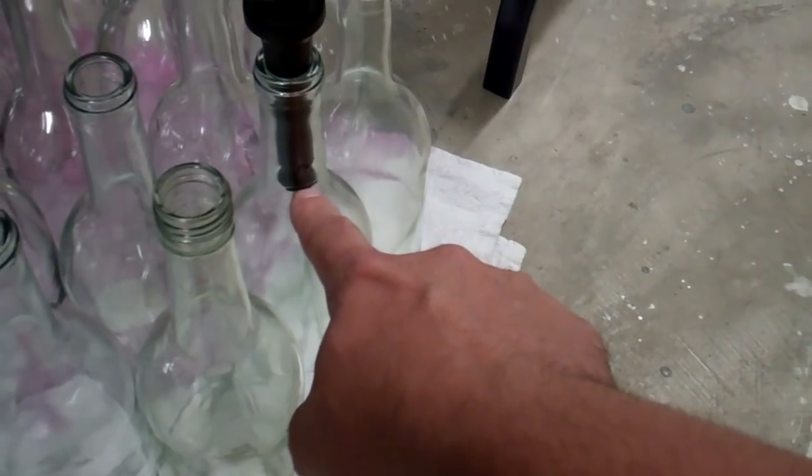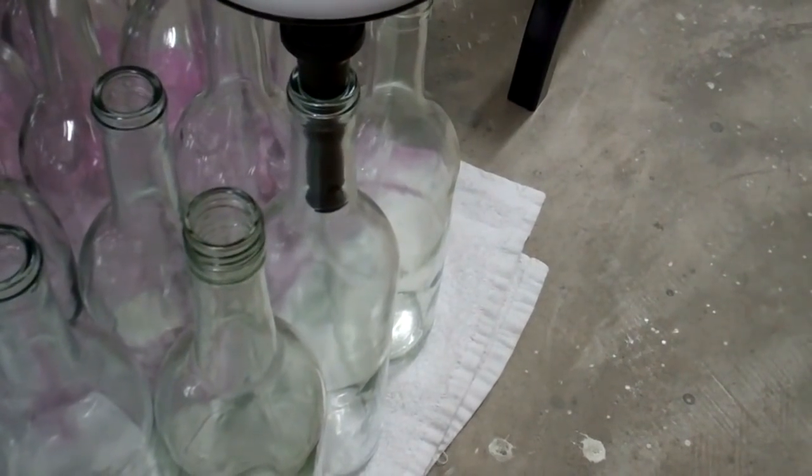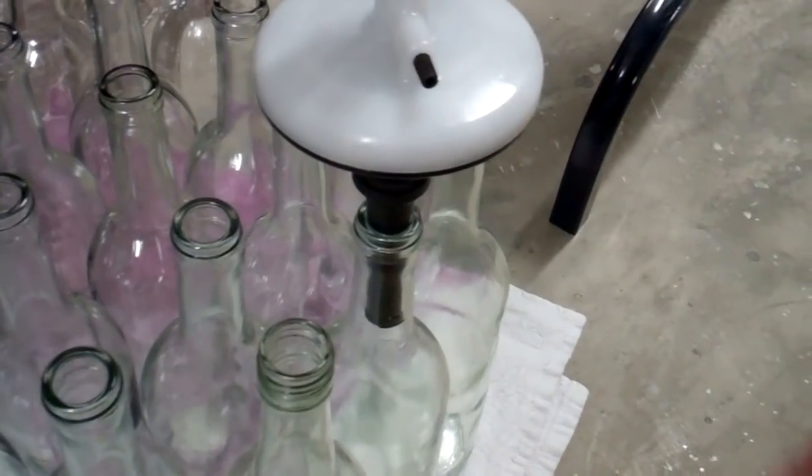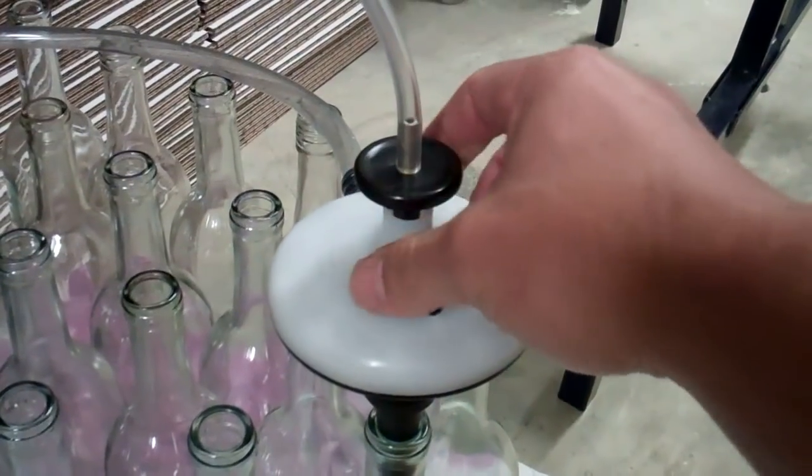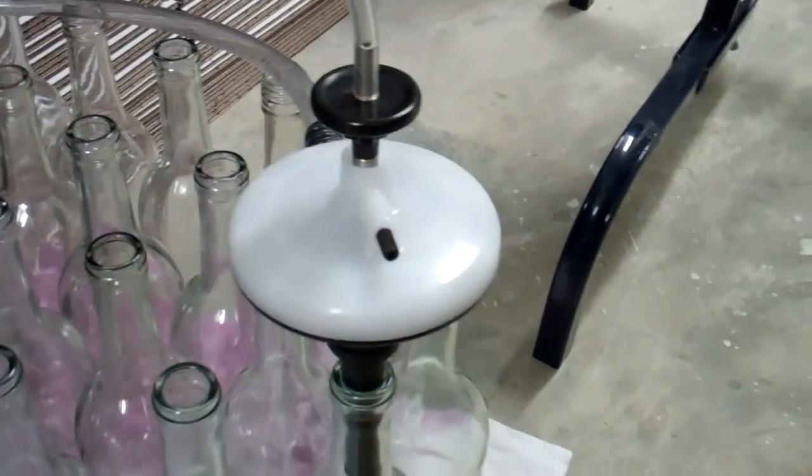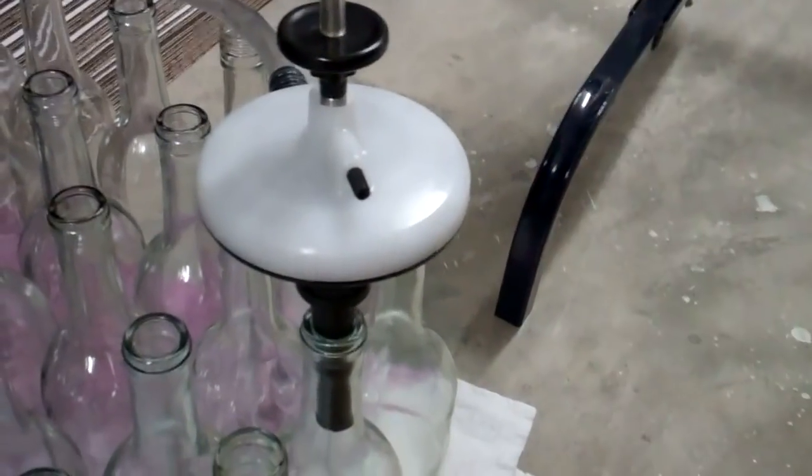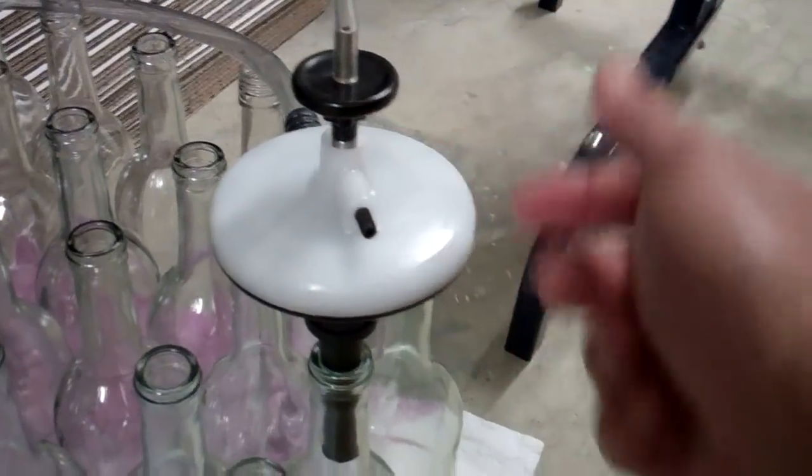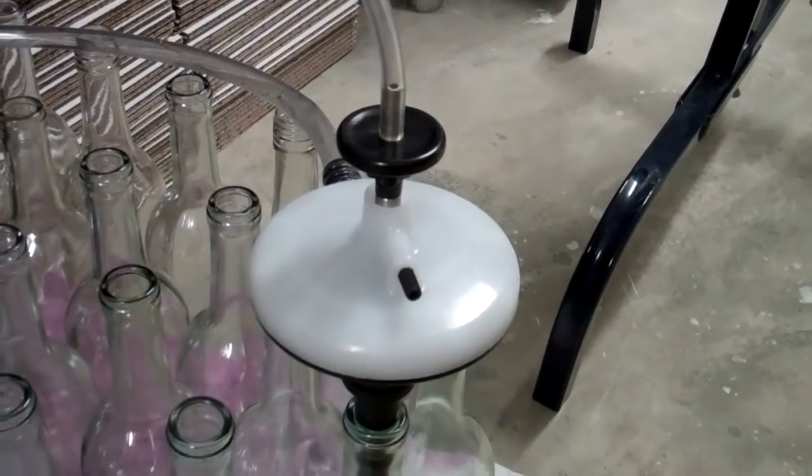When the wine reaches the base of the filler it should automatically shut off. If it doesn't automatically shut off then you can just manually pull it up. But you do want to make sure before you pull it out of your bottle that it's in the up position or you're going to dump wine all over the floor.